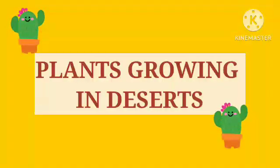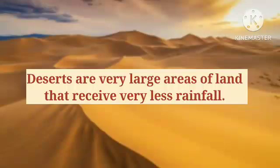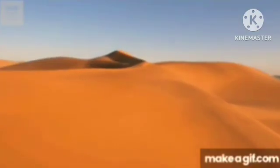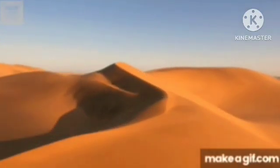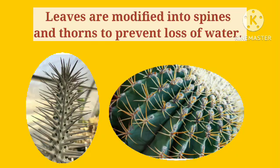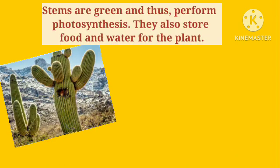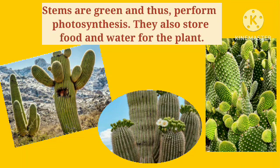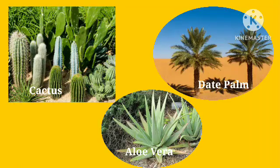Deserts are very large areas of land that receive very less rainfall. The soil in the desert is sandy. Plants growing in deserts are adapted to survive in very less amount of water. Leaves of these plants are modified into spines and thorns to prevent loss of water. Stems are green and thus perform photosynthesis; they also store food and water for the plant. Cactus, date palm, and aloe vera are some examples of desert plants.